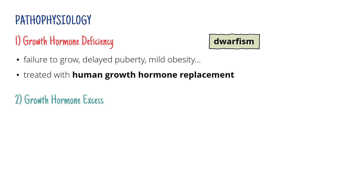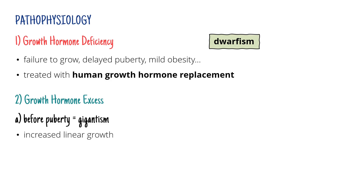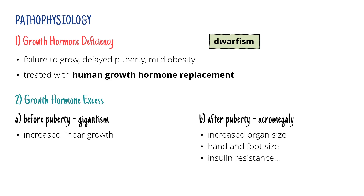If there's too much of the hormone, two things can happen. If there's too much of the hormone before puberty, then we talk about gigantism — the person simply grows too much. If it's after puberty, then the person cannot get any taller, but their organs can increase in size as well as their hands and feet. They can also suffer from insulin resistance — remember the diabetogenic effect. In this case, we want to inhibit its secretion, so the patient is treated with somatostatin analogues, which inhibit somatotrophs and the release of the hormone.